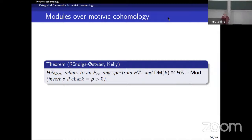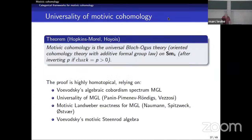There's another beautiful structural result: Röndigs-Østvær in characteristic 0 and Kelly in characteristic p showed that the motivic cohomology spectrum HZ refines to an E-infinity object, so it has a nice ring structure and one can talk about its category of modules. The homotopy category of HZ-modules then recovers Voevodsky's triangulated category of motives, inverting the characteristic when that's positive. This also shows that HZ is really the universal Bloch-Ogus theory, following from Hopkins-Morel, with details and the extension to characteristic p provided by Hoyois — using deep constructions and results in the motivic stable homotopy category.